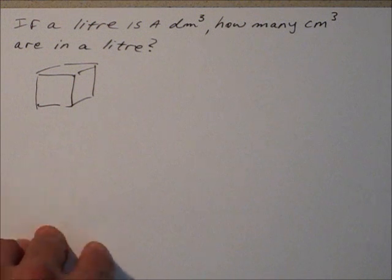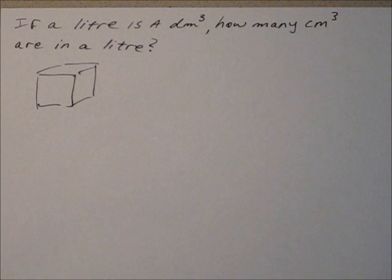So if a litre is a cubic decimeter, what does that really mean? Well, it means it measures one decimeter by one decimeter by one decimeter. Now, we don't often use the word decimeter. We usually talk about centimeters. But centimeters are a hundredth of a meter, and a decimeter is a tenth of a meter.